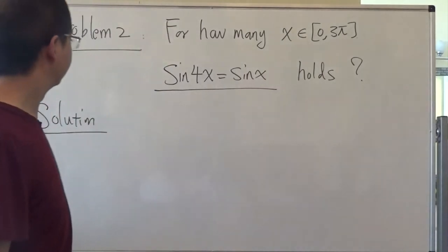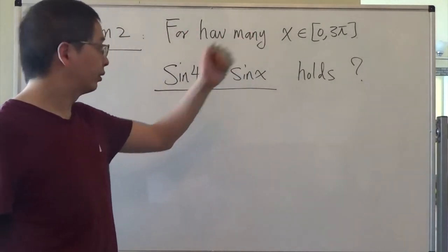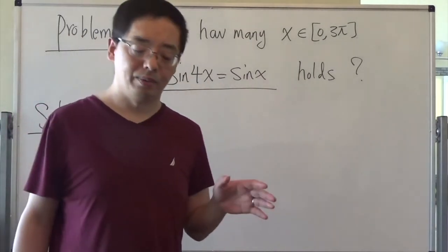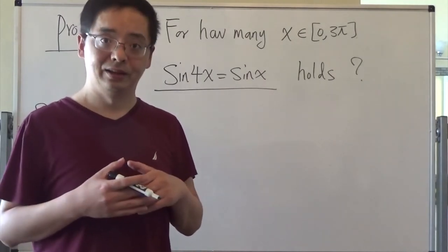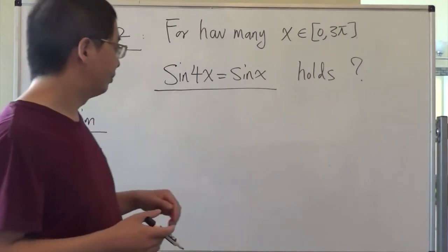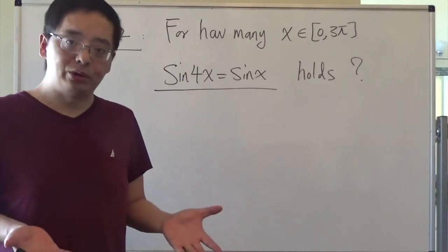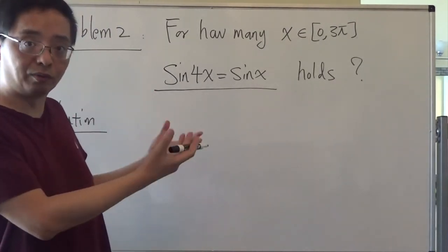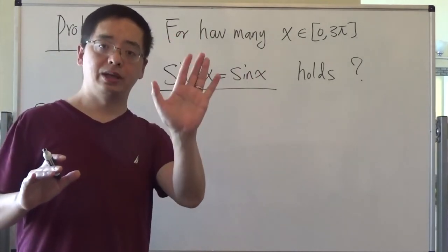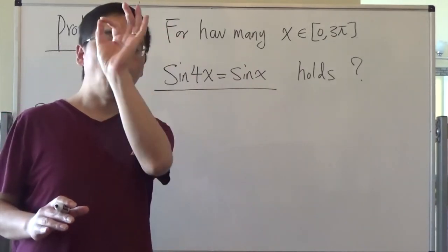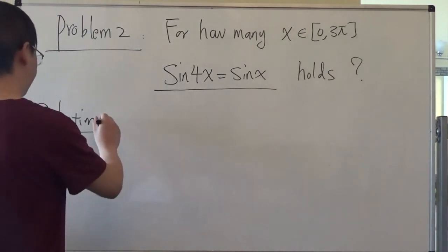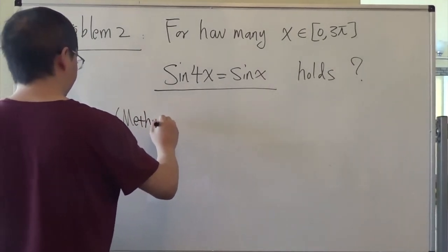Let's look at the next problem. The question asks: for how many x between 0 and 3π does sin(4x) = sin(x) hold? There are in general two methods. Method 1 is the algebraic method — solve the equation directly using trigonometric identities. Method 2 is the geometric method — draw the graphs of the functions involved and count the number of intersections, since each solution corresponds to one intersection.